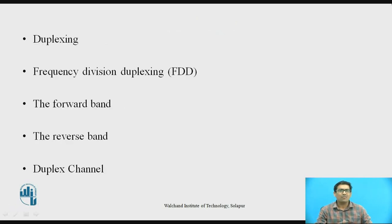Duplexing may be done using frequency or time domain techniques. Frequency Division Duplexing (FDD) provides two distinct bands of frequencies for every user. The forward band provides traffic from the base station to the mobile, and simultaneously the reverse band provides traffic from the mobile to the base station. In FDD, any duplex channel actually consists of two simplex channels — one forward and one reverse — and a device called a duplexer is used inside each subscriber unit and base station to allow simultaneous bi-directional radio transmission and reception.